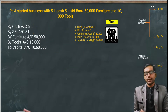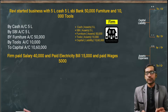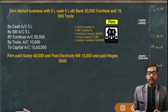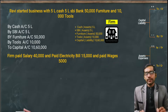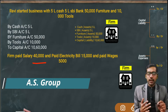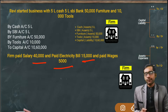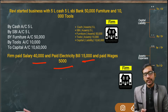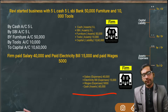Next entry: The firm paid Salary 40,000 rupees, Electricity Bill 15,000 rupees, and Wages 5,000 rupees. The firm paid 40,000 in salary, 15,000 in electricity bill, and 5,000 in wages. Total cash paid comes to 60,000 rupees — this is the total cash that decreased from the firm. In exchange, three expenses increased: Salary, Electricity Bill, and Wages.